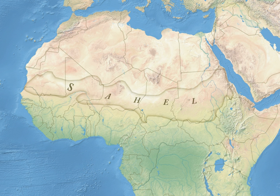The Sahel spans 5,400 km from the Atlantic Ocean in the west to the Red Sea in the east, in a belt that varies from several hundred to a thousand kilometres in width, covering an area of 3,053,200 square kilometres. It is a transitional ecoregion of semi-arid grasslands, savannas, steppes, and thorn shrublands lying between the wooded Sudanian savannah to the south and the Sahara to the north.